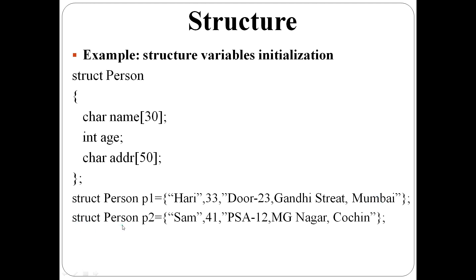Next, structure person p2. Second structure variable p2 equal to Sam, name is set. Age 41 is set. Then addr, this particular address is set. So, this is an example of structure variable initialization.